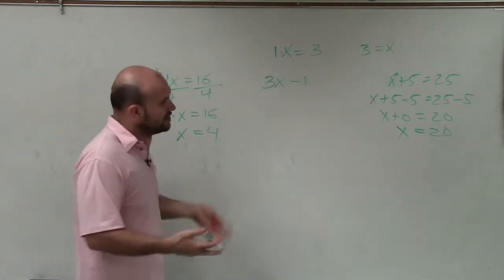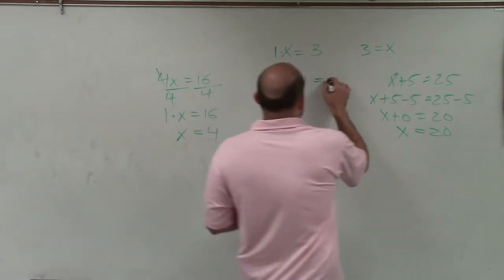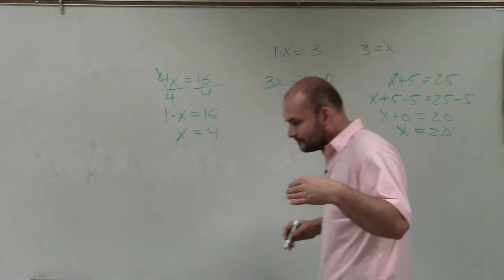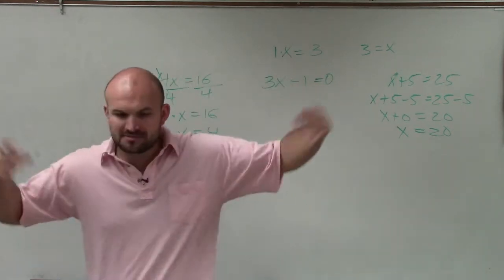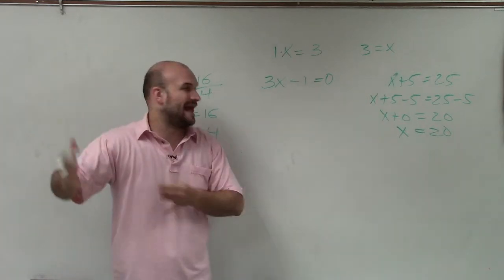So when we're looking into isolate a variable, basically what we want to do is undo what is happening to the variable. And we're going to do, you know, a whole bunch of problems, multi-step and distributive property and so forth. And those are kind of a different animal.